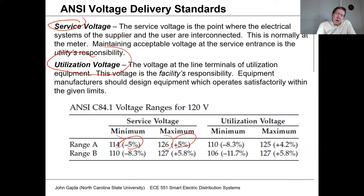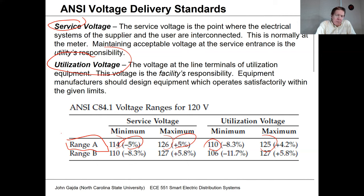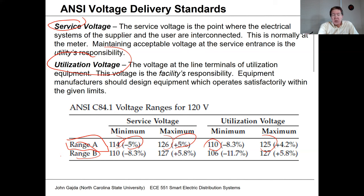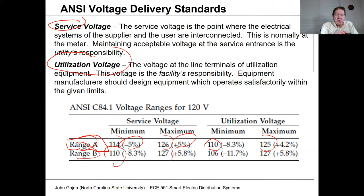ANSI standards allow for utilization voltage to get as low as 110 or as high as 125 for Range A service under normal conditions. Range B corresponds to emergency conditions — like a major storm or generation/transmission issues — where service voltage can vary within a wider range, between 110 and 127 on a 120V basis. Normally utilities try to adhere to Range A.